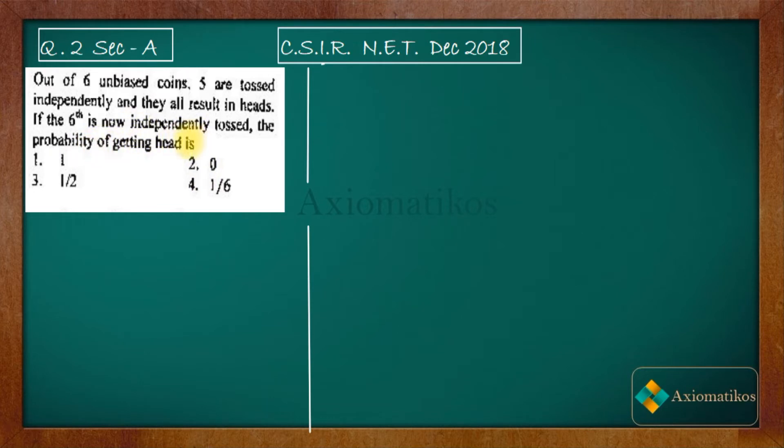So see, these are the six coins that you have. Now you have already tossed these coins independently - five coins you have tossed. You're going to toss coin number six, and they are asking the probability of getting head on the sixth coin.